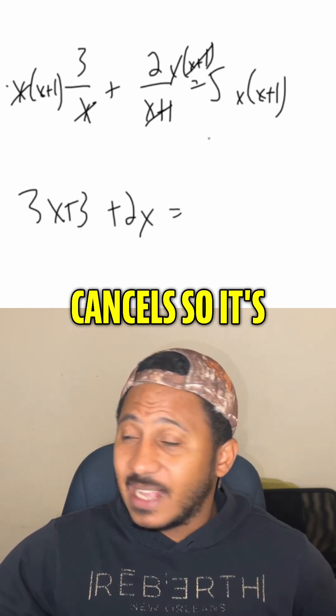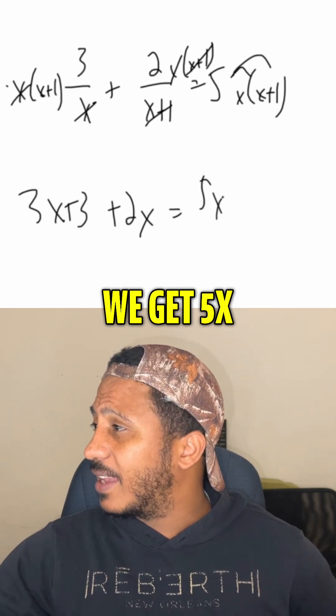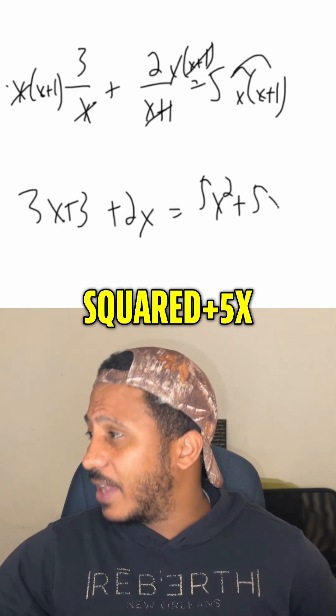And then here, we get nothing canceled. So it's just 5x times x plus 1. If we distribute that, we get 5x squared plus 5x.